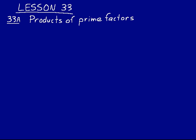First let's talk about products of prime factors. Remember prime numbers, those are numbers that are divisible by themselves and one only, such as 2, 3, 5, 7, 11, 13, and so on.